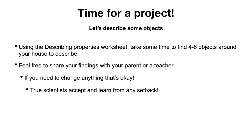So this is what you are going to be doing: you're going to use the describing properties worksheet and take some time to find four to six objects around your house to describe using the qualities of matter we discussed. Share your findings with your parent or a teacher — if you need to change any of your thoughts, that's okay. True scientists accept and learn from any setback. That concludes our part of the lesson for today. Remember your findings, remember your conclusions — we are going to expand more upon them in our next lesson. Bye!